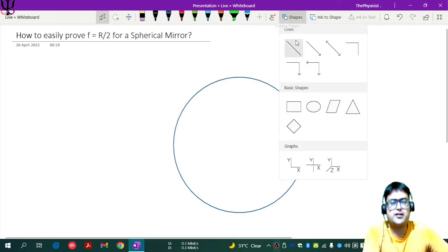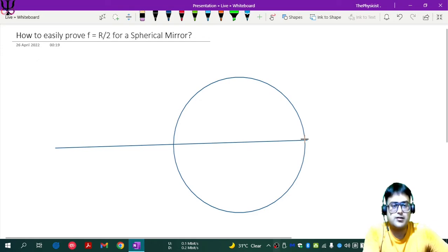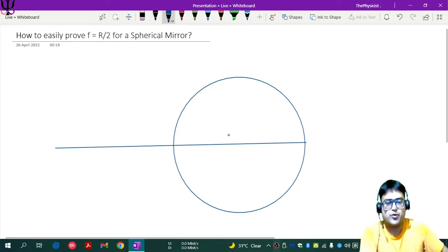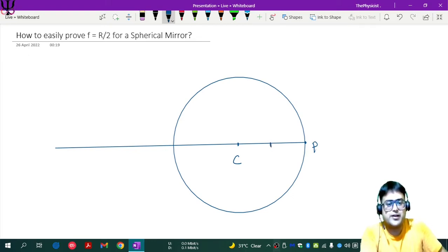And then let's draw a straight line, that's the principal axis. And let us call this point here as the center of curvature. This point is pole, somewhere between C and P there is a focus F.